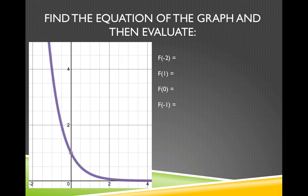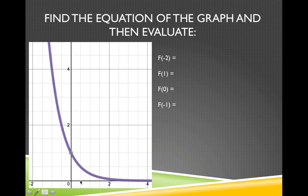The next thing we're going to do is find the equation of the graph and then evaluate. I can evaluate the function by looking at the graph sometimes. If x is negative 2, I could evaluate what y is if I could see it on the graph, but on this picture I can't tell. So I'm going to have to find the equation. When x equals 1, y is one-half. When x is 0, y is 1. When x is negative 1, y is 2. But I still need to find the equation to evaluate f of negative 2.